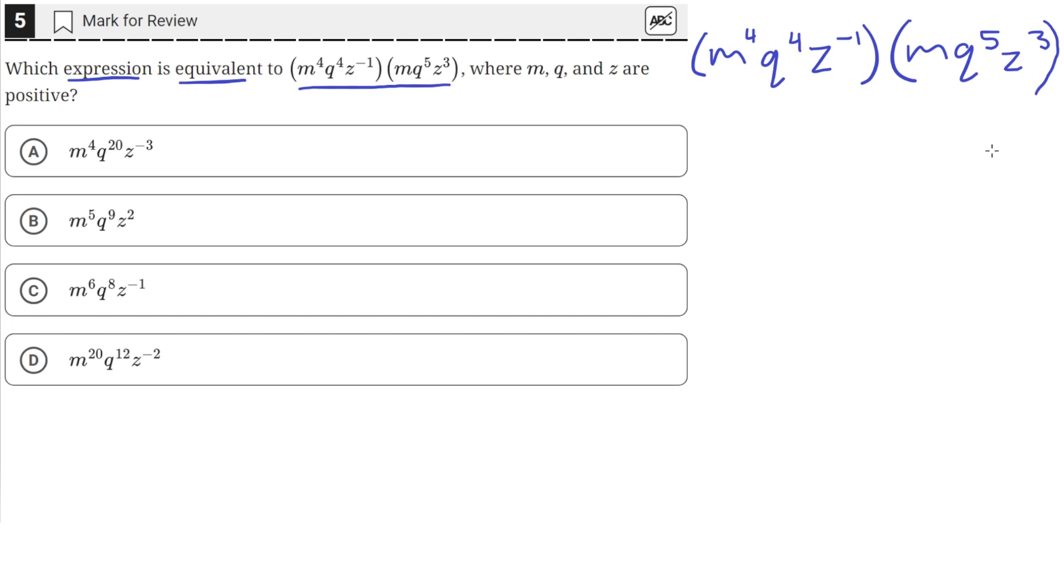Okay, so this is just a rules of exponents problem. One of the rules of exponents is that when you're multiplying, say, x that's raised to the power a with another x but this one is raised to the power b.